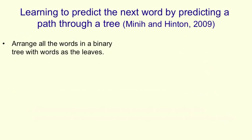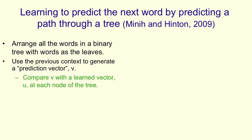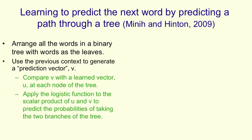A different way to avoid a great big softmax is to structure the words into a tree. We arrange all of the words in a binary tree with the words as its leaves. We then use the context of previous words to generate a prediction vector V. We compare that prediction vector with a vector that we learn for each node of the tree. The way we do the comparison is by taking a scalar product of the prediction vector and the vector that we've learned for the node of the tree, and then we apply the logistic function to that scalar product. That will give us the probability of taking the right branch in the tree, and one minus that gives us the probability of taking the left branch.